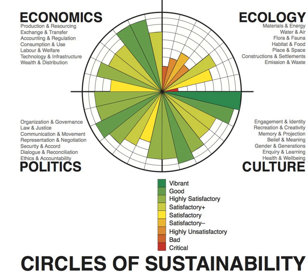The UN Global Compact is not a regulatory instrument, but rather a forum for discussion and a network for communication including governments, companies and labor organizations, whose actions it seeks to influence, and civil society organizations representing its stakeholders. The UN Global Compact says that once companies declared their support for the Principles, this does not mean that the Global Compact recognizes or certifies that these companies have fulfilled the Compact's principles.